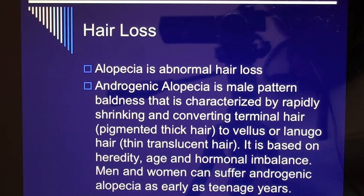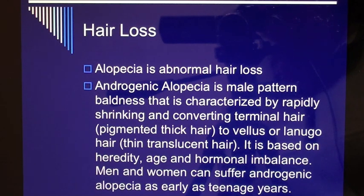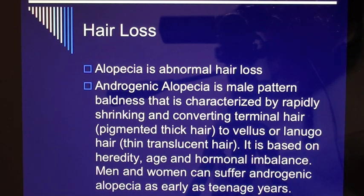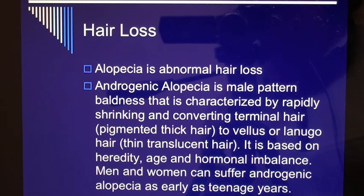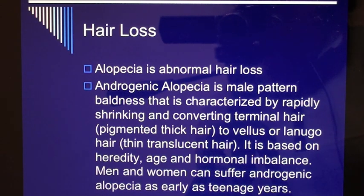Hair loss: alopecia is abnormal hair loss. Androgenic alopecia is male pattern baldness, characterized by rapidly shrinking and converting terminal hair — pigmented, thick hair — to vellus or lanugo hair, which is thin and translucent. It is based on heredity, age, and hormonal imbalance. Men and women can suffer androgenic alopecia as early as their teenage years.